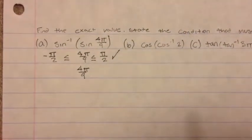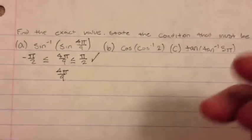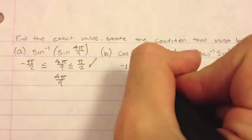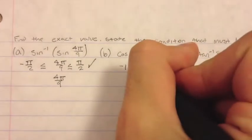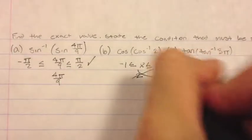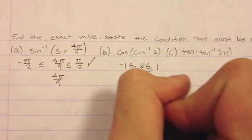So for b, the same thing, it has to be in the domain of negative 1 and 1. And 2 is not in that domain, so the answer is undefined.